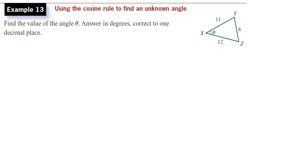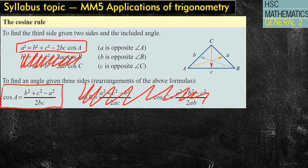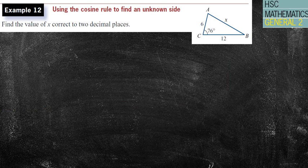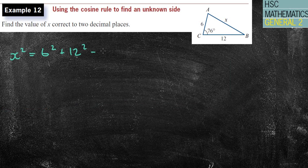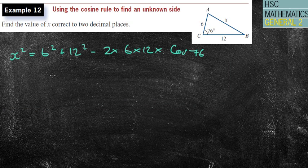Alrighty, okay, so I want you to pause. I want you to pause this and I'm going to give you a question and I want you to have a crack at this and see how you go. Okay, so hopefully we've got x² = 6² + 12² - 2 × 6 × 12 × cos 76°. x² equals, so I'm going to chuck that into my calculator now.